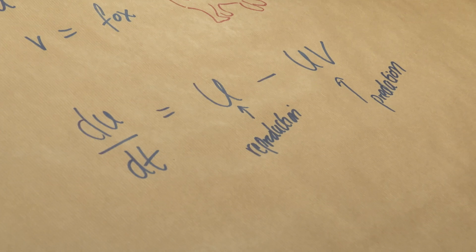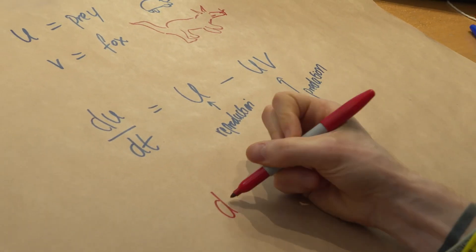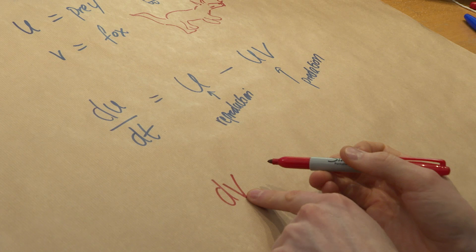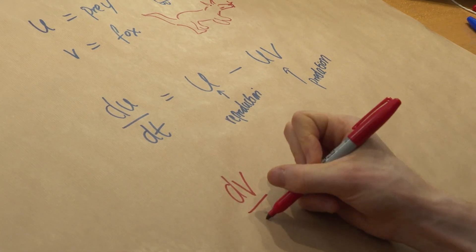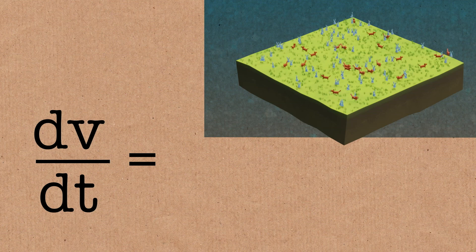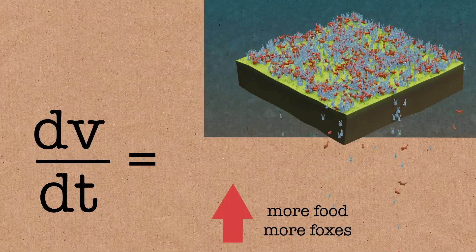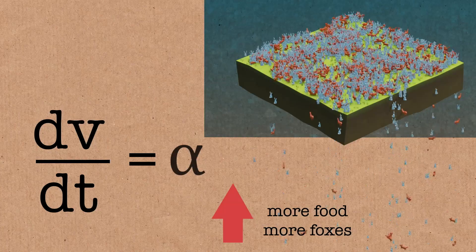Now if we want to write down the same for the foxes, we're going to start with the rate of change of the fox, the predator population, over time. Now the foxes will grow when there's more food. Because they're not as prolific at breeding, we're going to put in a constant, let's just call it alpha, and this is going to be UV.